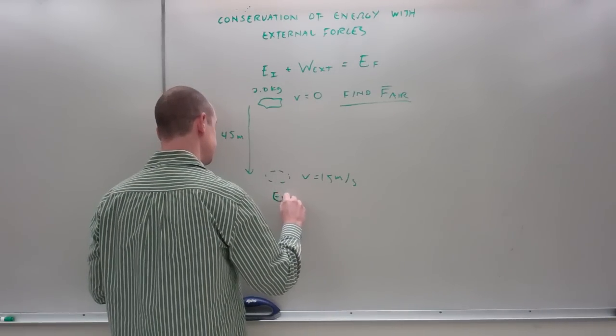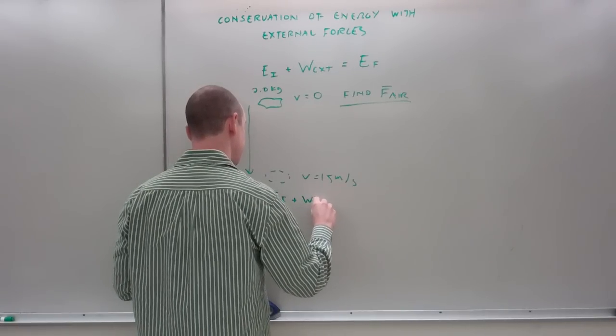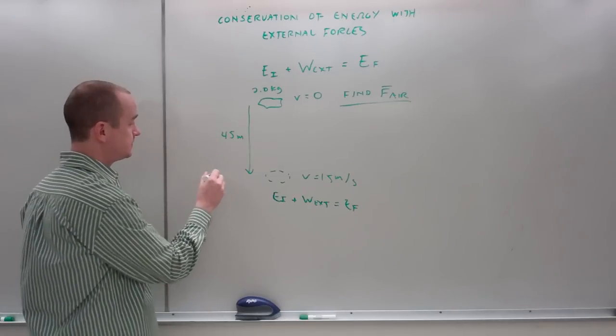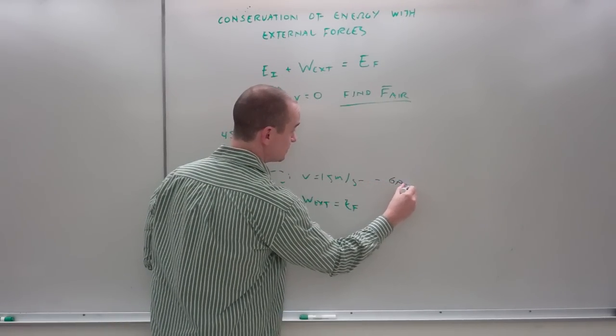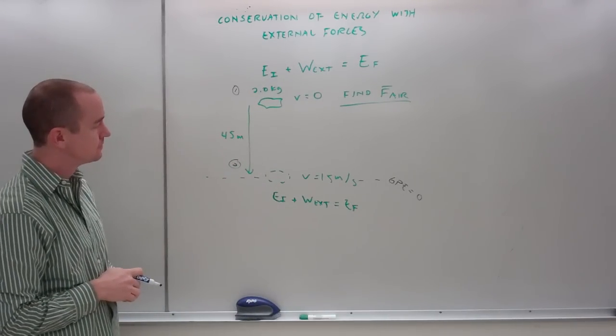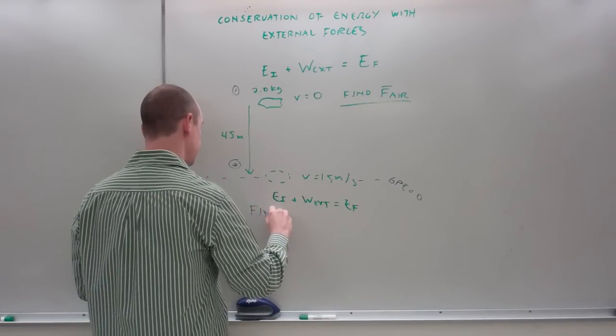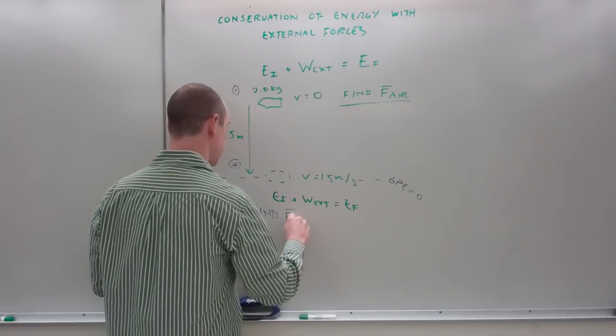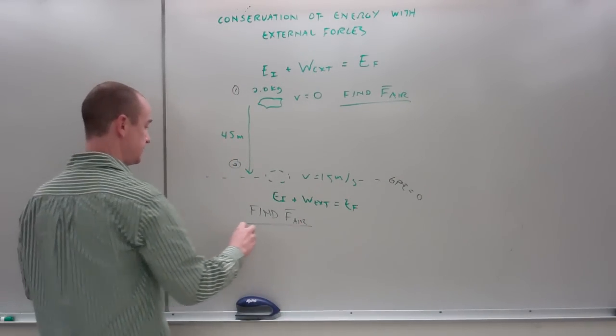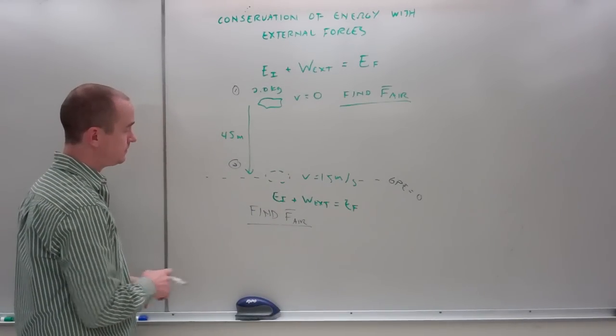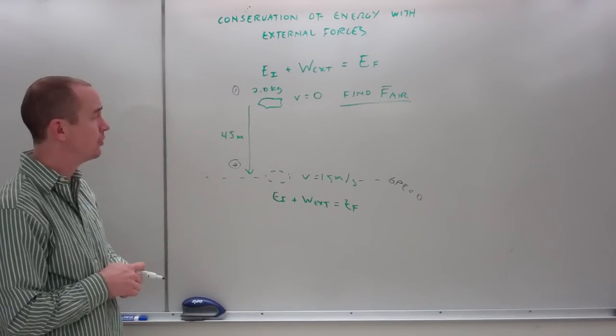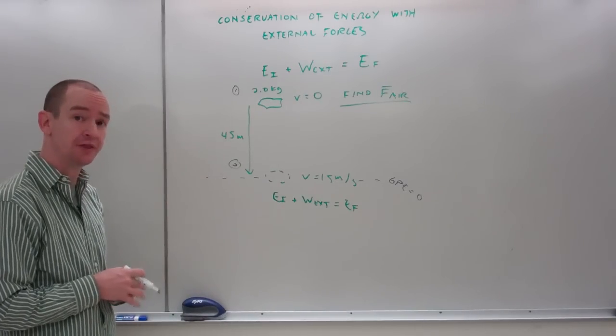All right. I need to pick my GP equals zero line. I need to pick a before and after. I'm trying to find the average force of air. Okay. Let's figure out what we start with. Initially, I have no kinetic energy. There are no springs, but I am above my GP equals zero line. Therefore, I have GPE.